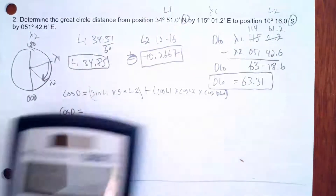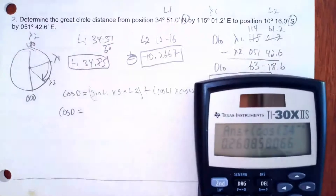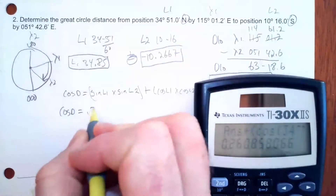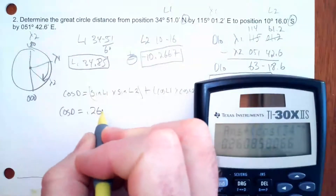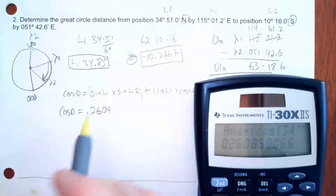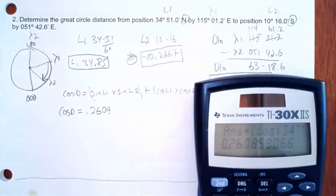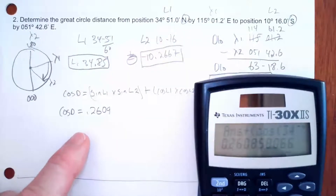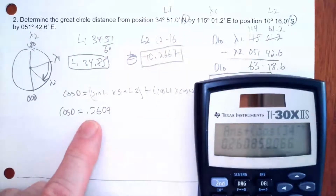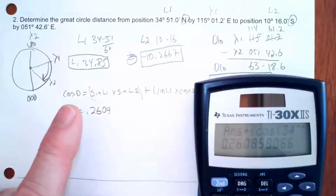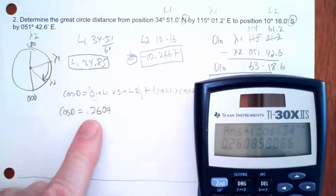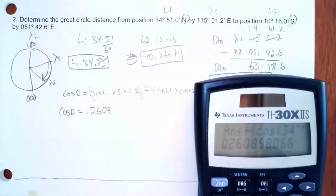The cosine of D equals 0.2609. On the exam, I want to see you write that out — it shows me you're not just guessing; you understand the process and computed the intermediary steps.